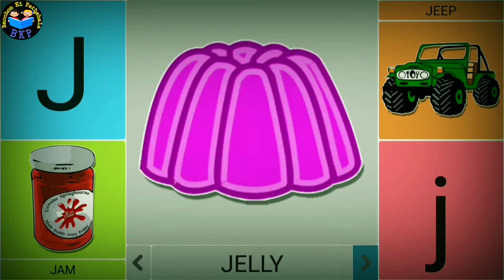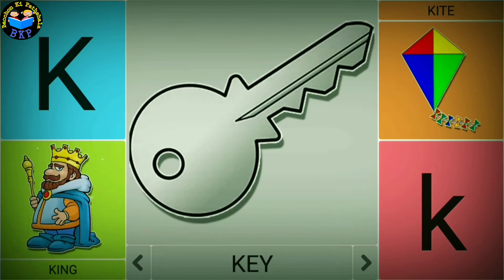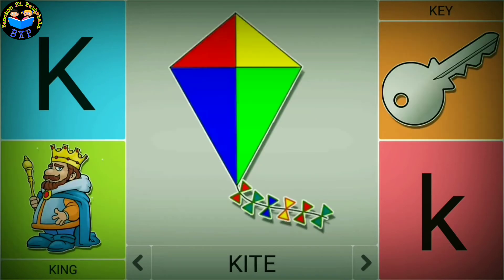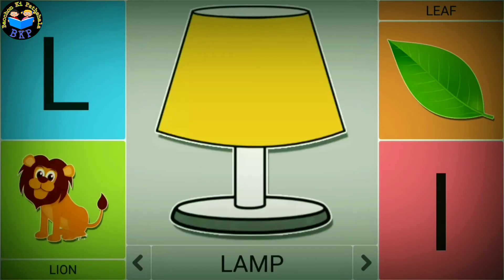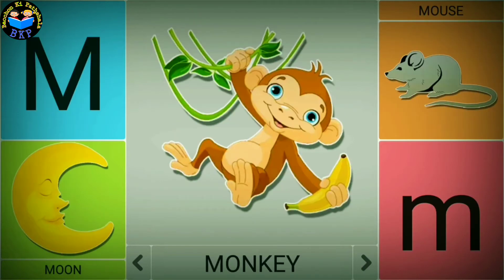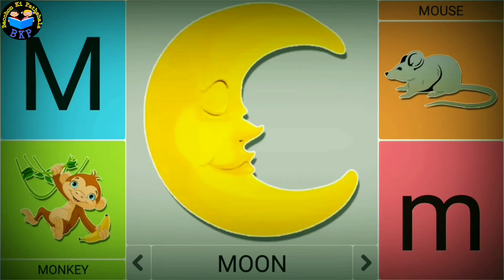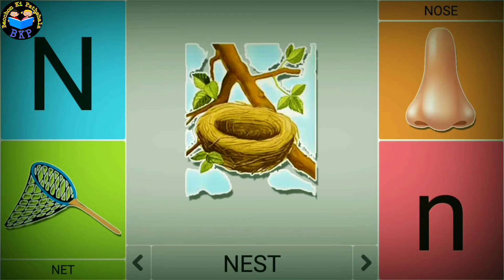K is for king. K is for key. K is for kite. L is for lion. L is for lamp. L is for leaf. M is for monkey. M is for moon. M is for mouse.